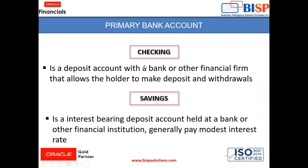Now we will see there are three types of accounts: checking, savings, and money market. Checking is a deposit account with a bank or other financial firm that allows a holder to make deposits and withdrawals. The second is savings — it is an interest-bearing deposit account held at a bank or other financial institution.